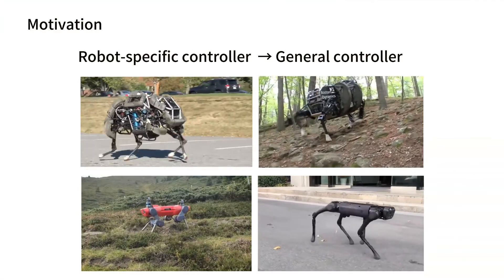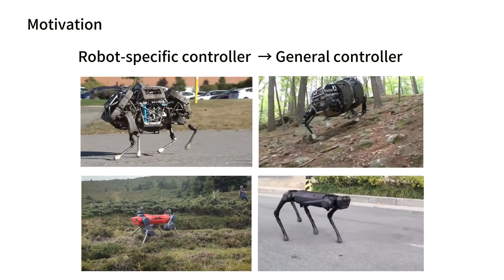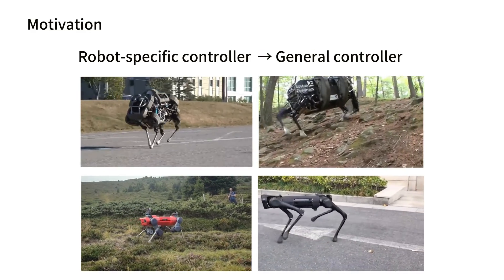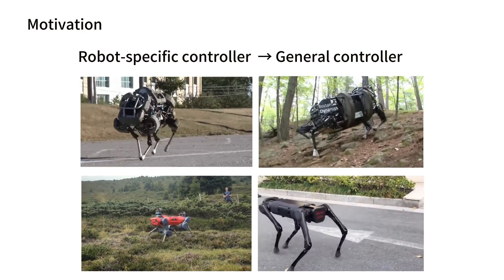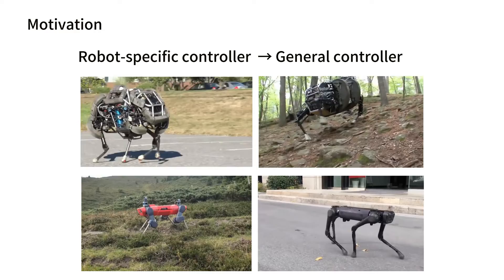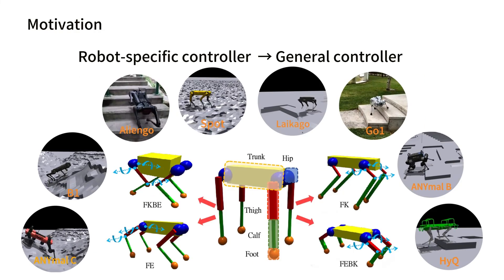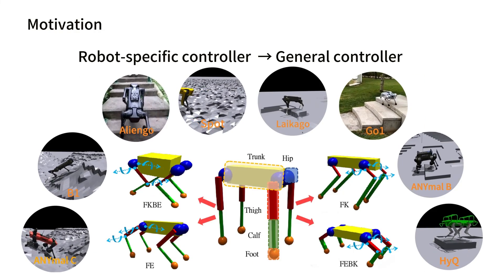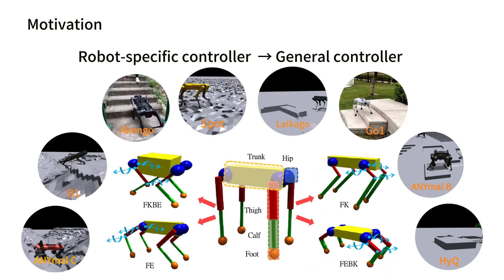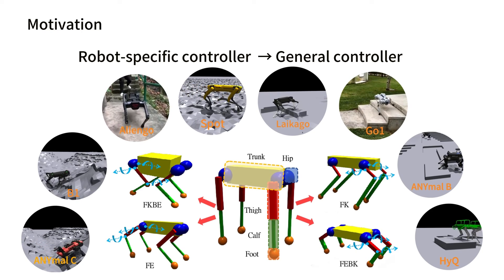In the past decade, various commercial quadruped robots have emerged with distinct physical attributes. However, their designed controller is robot-specific. We aim to train a generalized controller for all the morphologies of quadrupedal robots and enable them to traverse different challenging terrains.